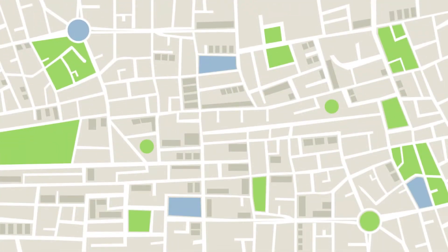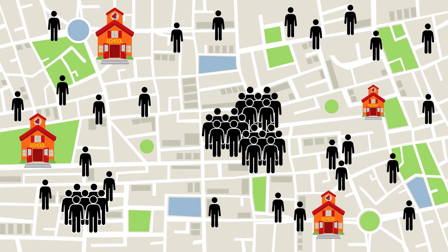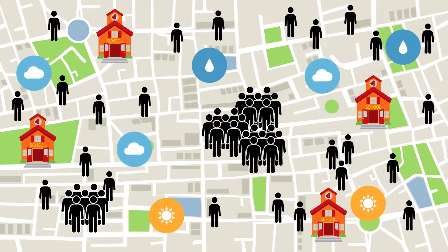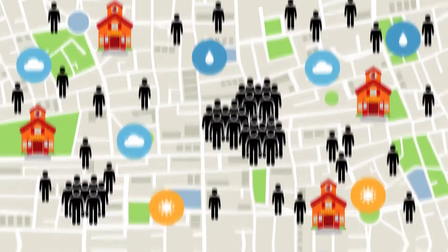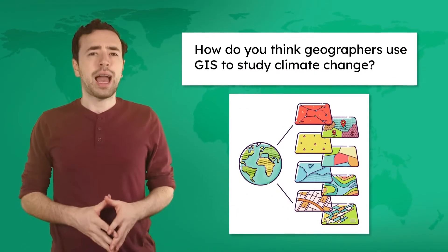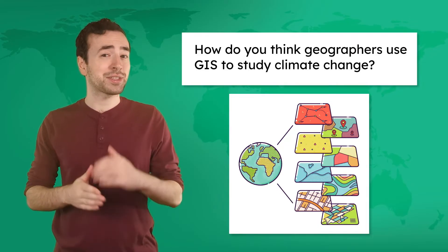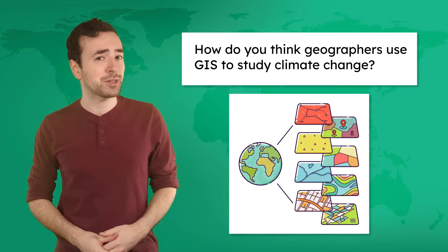GIS is like a super-powered map that lets geographers layer all kinds of information on top of a basic map to help them identify patterns. Imagine you have a regular map of a city. With GIS, you can add layers of data like population density, the location of schools, and even things like the weather. How do you think geographers use GIS to study climate change?